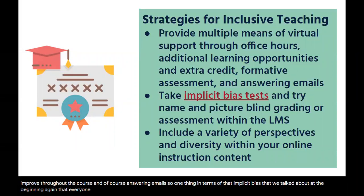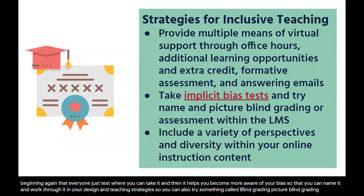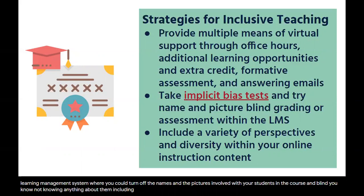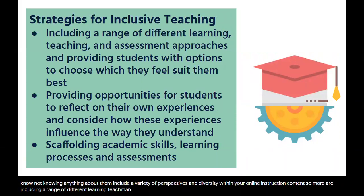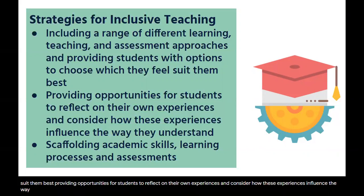There is an implicit bias test you can take to become more aware of your own bias so you can name it and work through it in your design and teaching strategies. You can also try blind grading within the learning management system — turning off students' names and pictures so you're grading without knowing anything about them. Include a variety of perspectives and diversity within your online instruction content, a range of learning and assessment approaches, provide students with options to choose what suits them best, and scaffold academic skills, learning processes, and assessments.